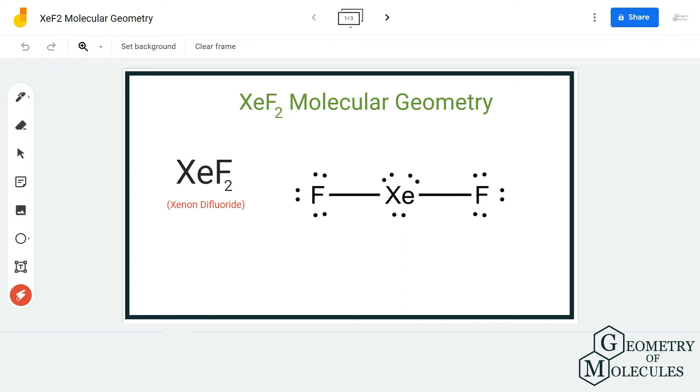As you can see, there are three lone pairs on xenon atom. Before we move forward, always try and start by looking at the Lewis structure as it will give you a clear idea of the arrangement of atoms.